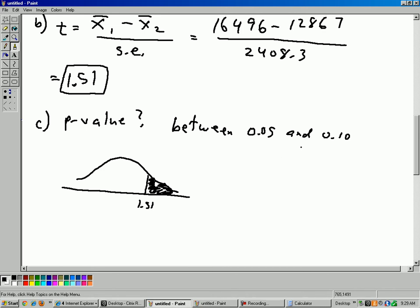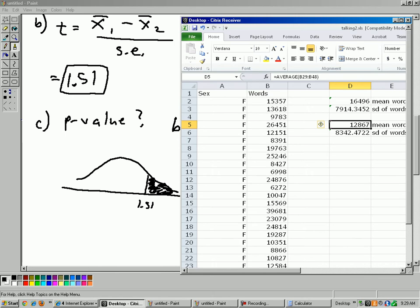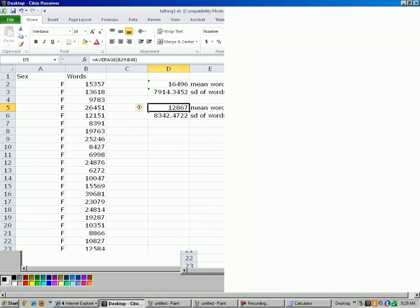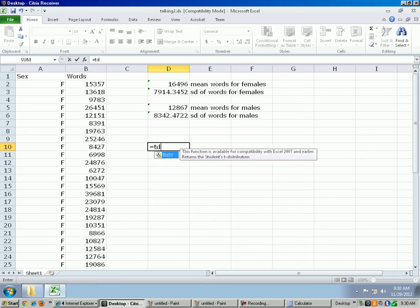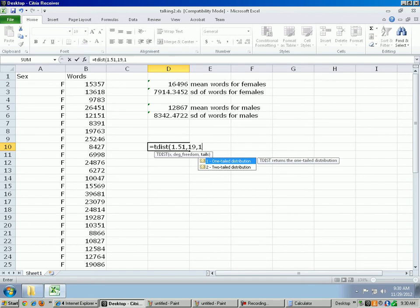That's good enough. That tells us that whatever it is, it's more than 0.05. If you're curious, if you want to know a more precise p-value, you can do something like go to Excel here. Let's get our Excel sheet one more time here. So I'll just do the tdist command, tdist. And then my p-value, 1.51. Degrees of freedom is 19. And then 1 for a one-tailed test.